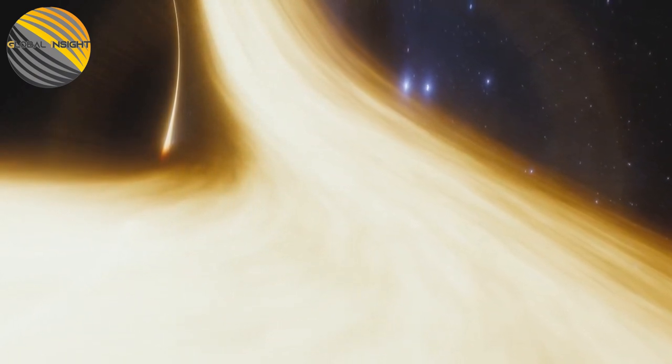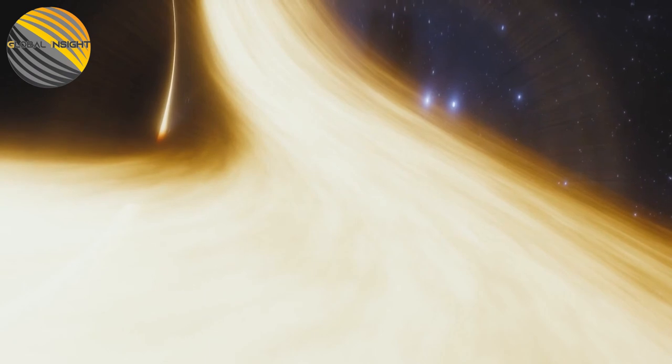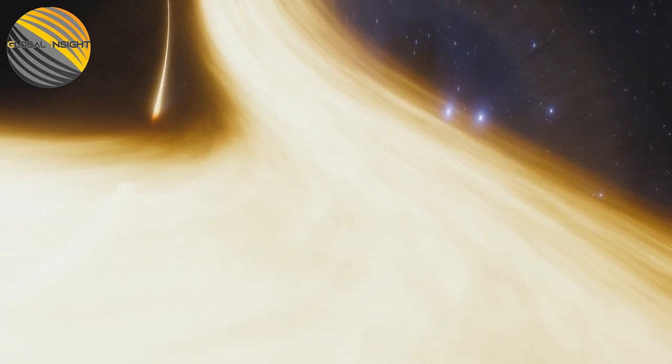Black holes have three layers: the outer and inner event horizon, and the singularity.